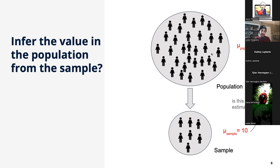Statistics provides the mathematical framework to answer this critical question: I measured mu in the sample — in our example, the average height turned out to be 10 — is this a good estimate of the average mu in the population? Is this reflective of what happens in the actual population? Statistics provides the formal framework to answer this very question. Pausing here for a few seconds — any questions so far? Slides will be shared on Slack later.